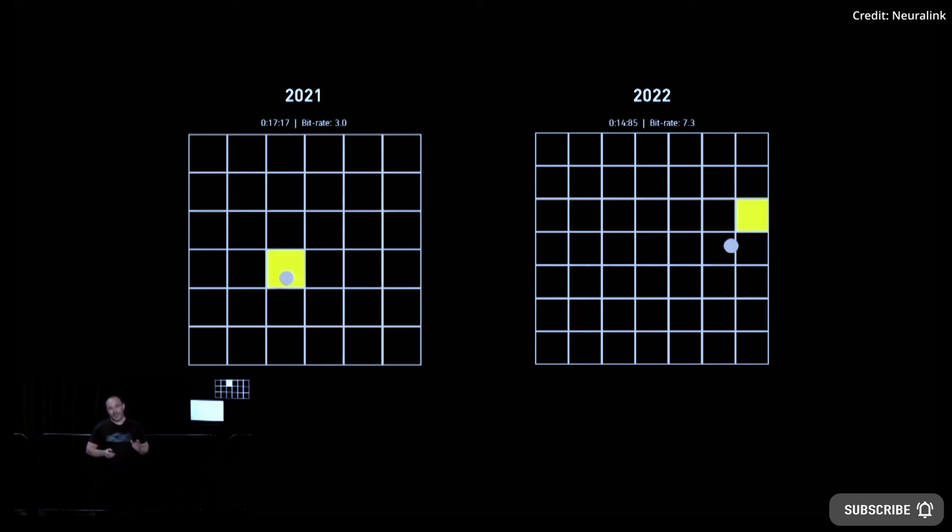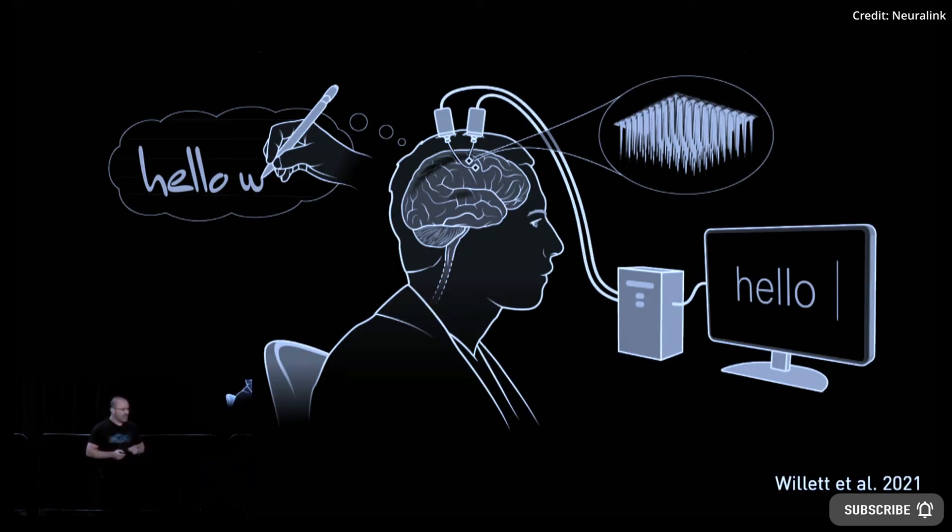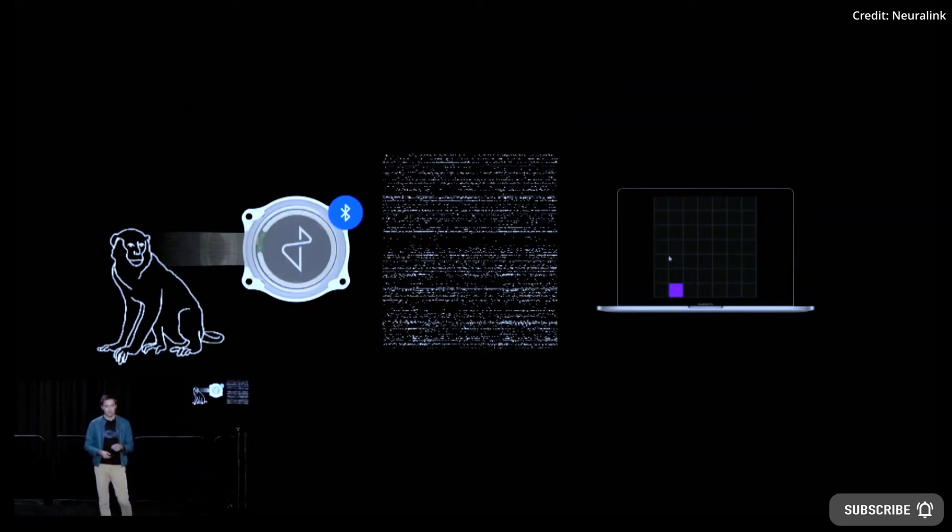As a first application of the technology, Neuralink hopes to help people with quadriplegia, or ALS, by giving them the ability to control computers and mobile devices directly with their thoughts.